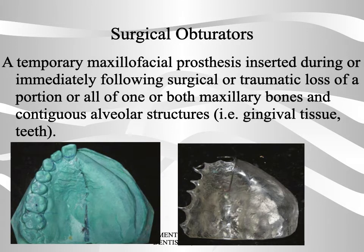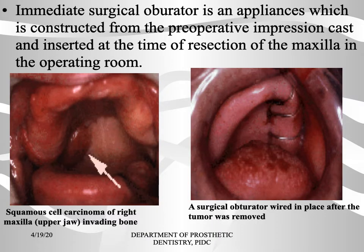A surgical obturator is a temporary maxillofacial prosthesis inserted during or immediately following surgical or traumatic loss of a portion or all of one or both maxillary bones and the alveolar structures. An immediate surgical obturator is constructed from the preoperative impression cast and inserted at the time of resection of the maxillae in the operating room. The picture on the left shows squamous cell carcinoma of the right maxilla invading the bone, and the picture on the right shows a surgical obturator wired in place after removal of the tumor.